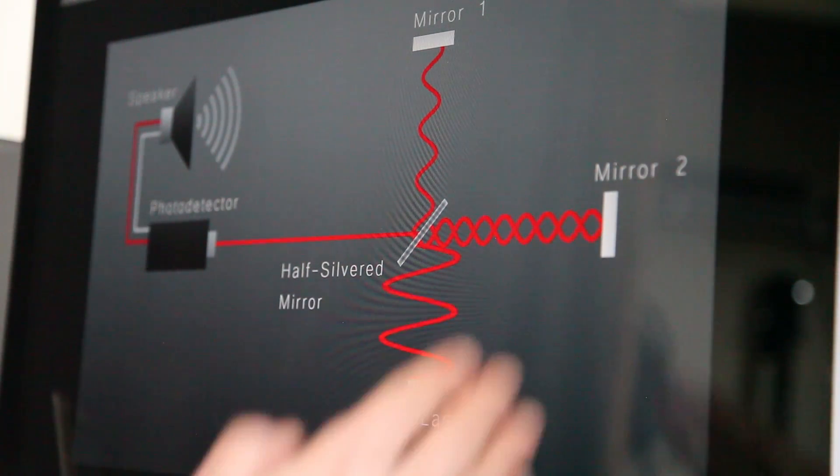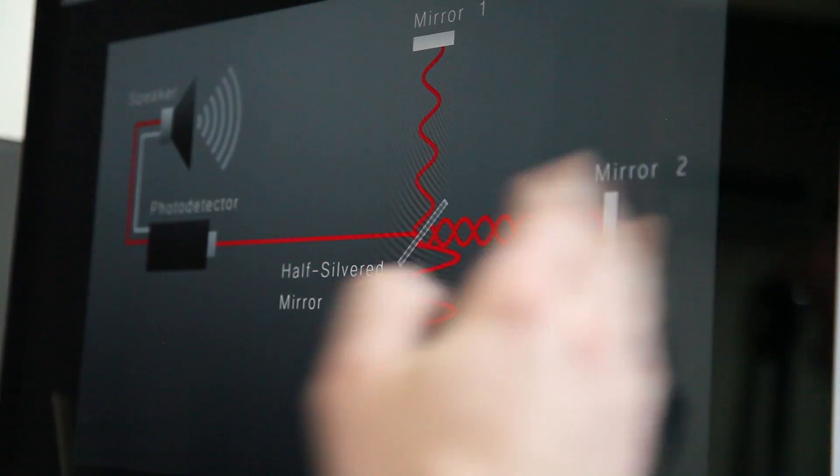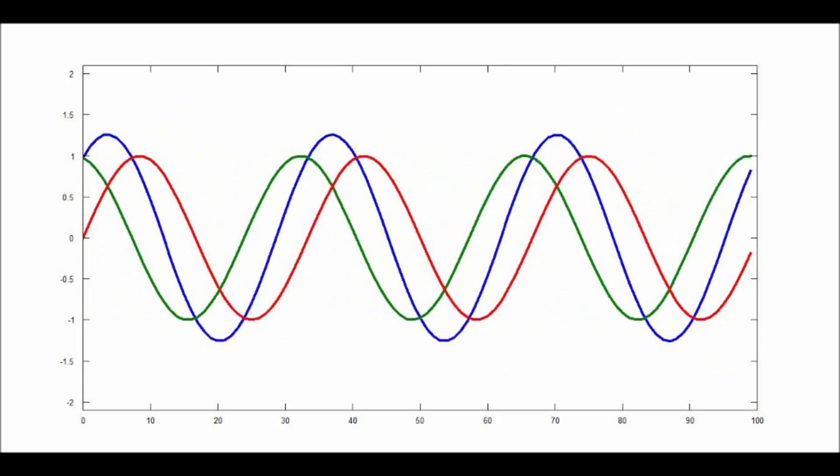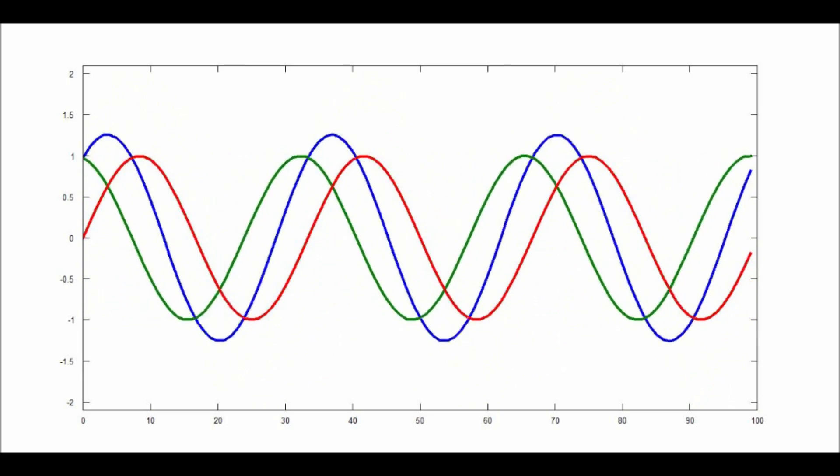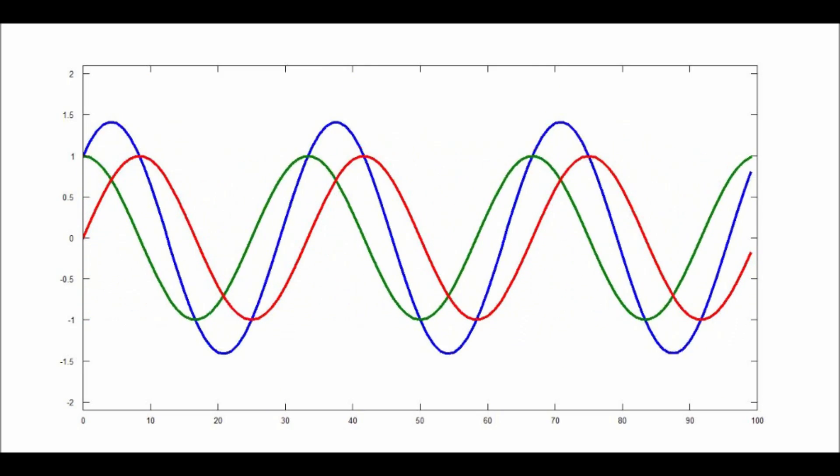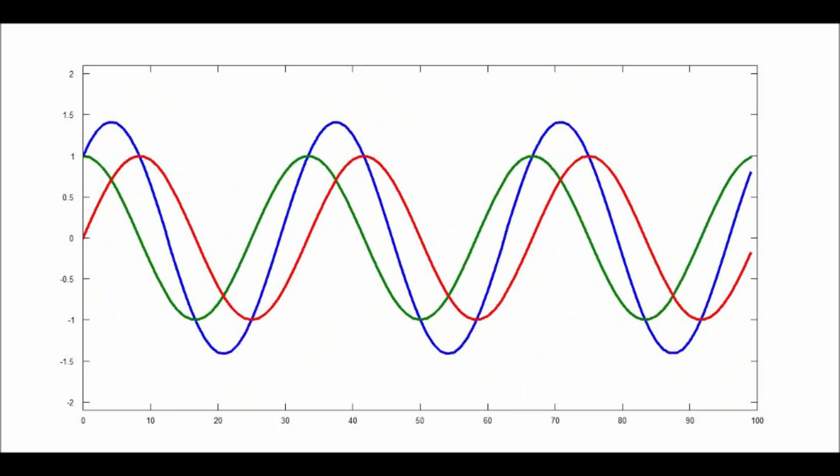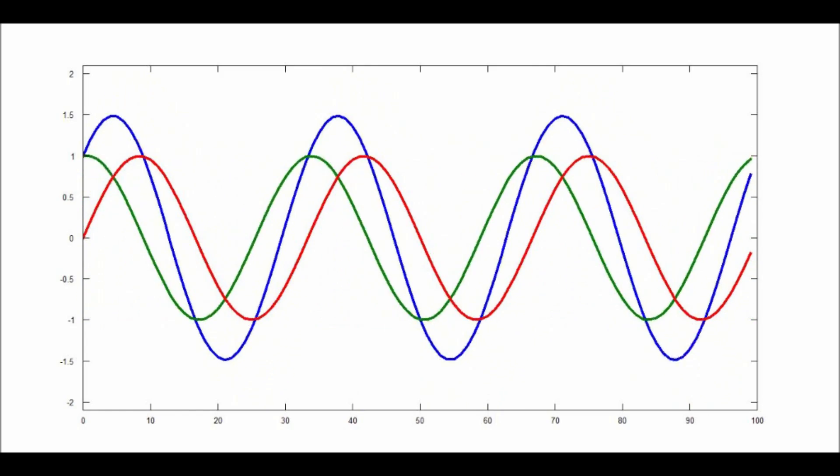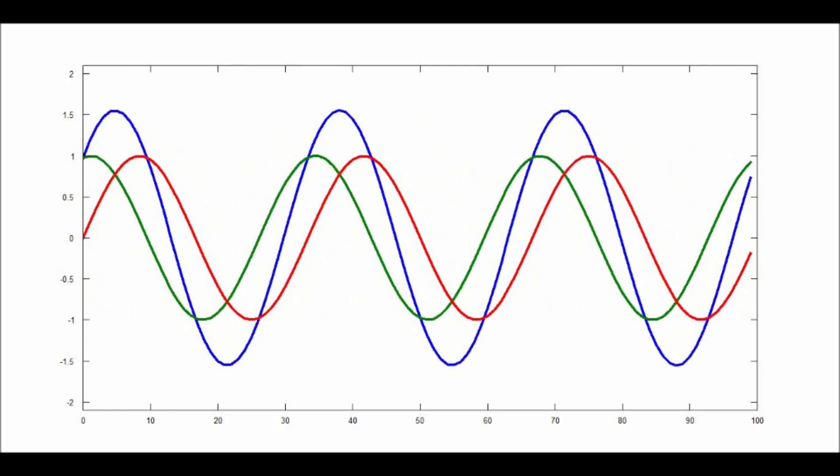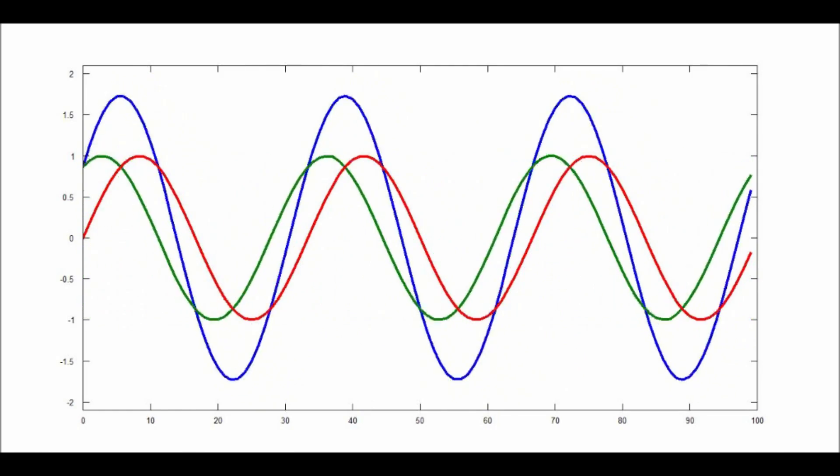If we move the mirror at a constant speed along the beam's axis, the phase will continue to shift, and the interference will oscillate between constructive and destructive. The photodetector sees this as a flashing light, which converts into an oscillating voltage, which we can play out of a speaker. The frequency of this oscillation depends on the wavelength of the laser and the speed of the mirror. The faster the mirror goes, the higher the frequency.